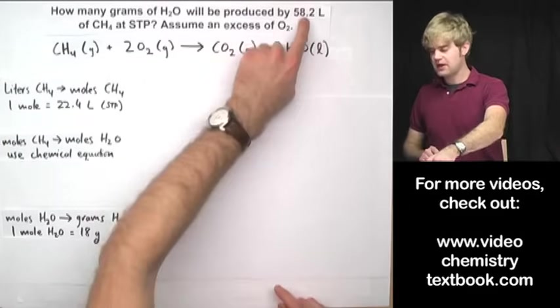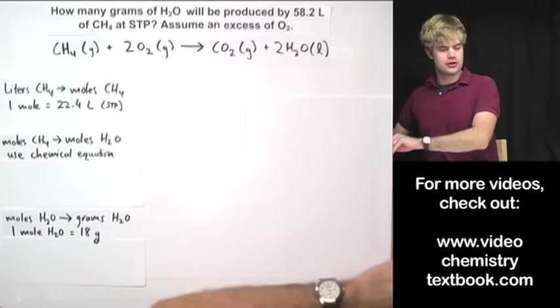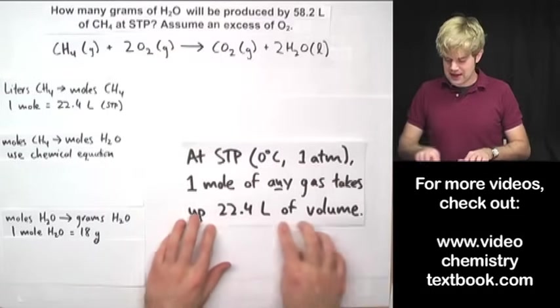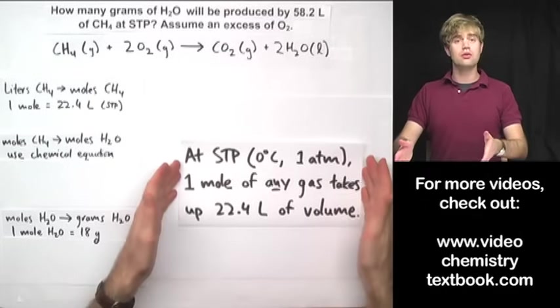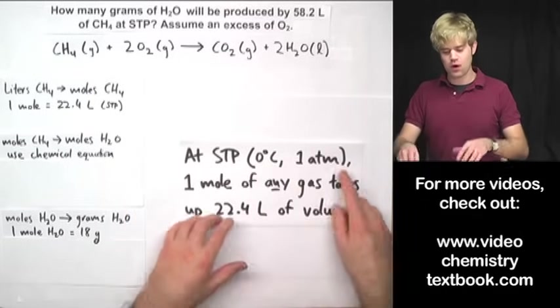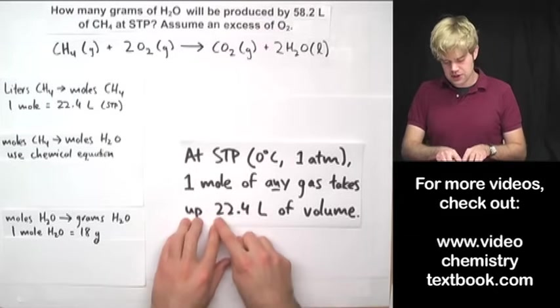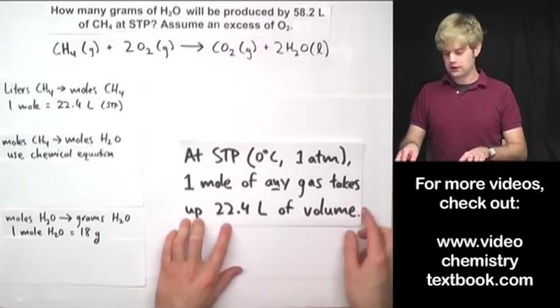The first thing here, 58.2 liters of CH4, again, it says that it's at STP, so I can take advantage of this really convenient rule, that at STP, which is zero degrees Celsius and one atm of pressure, one mole of any gas takes up 22.4 liters of volume.